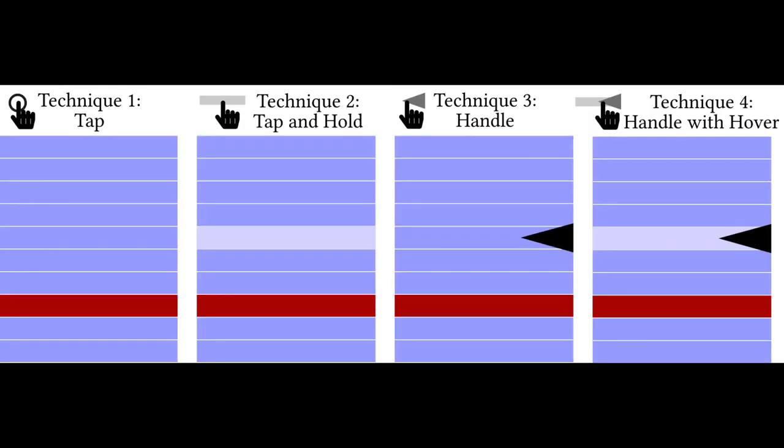For the techniques, we compared the conventional tap interaction with three techniques with visual feedback. The tap and hold technique allowed users to preview which item would be selected if they stopped holding down their fingers, allowing them to correct the selection.